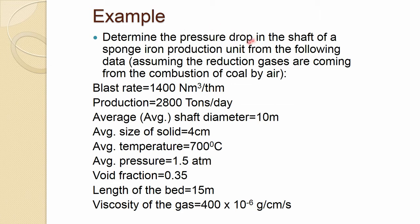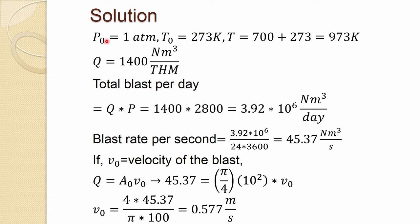For pressure drop we use the Ergun equation, as discussed for the blast furnace. At standard conditions consider one atmosphere and 273 K. The process is operating at 700°C which is 973 K. The blast rate is 1,400 normal meter cube per ton of DRI, and the production rate is 2,800 tons per day.